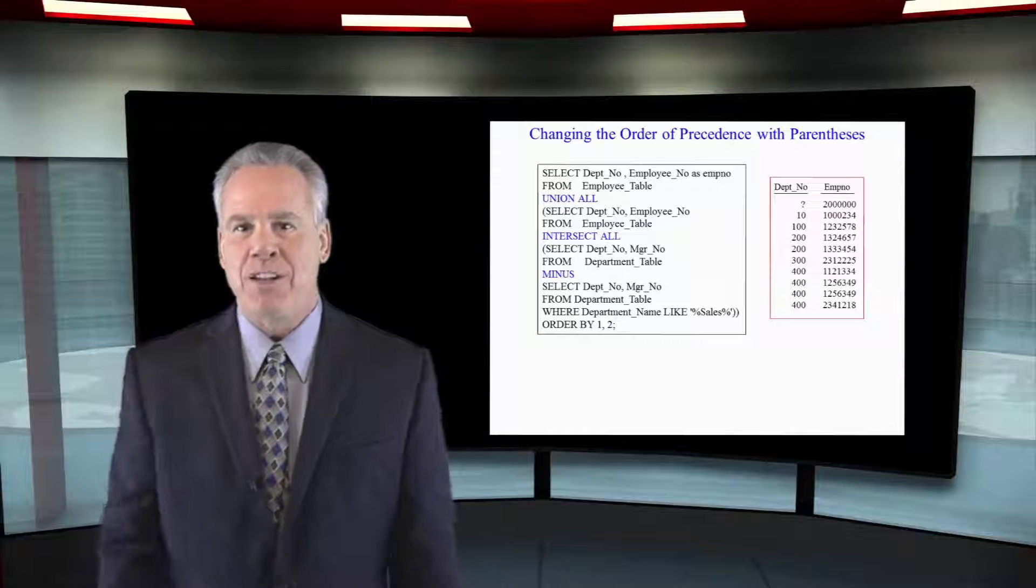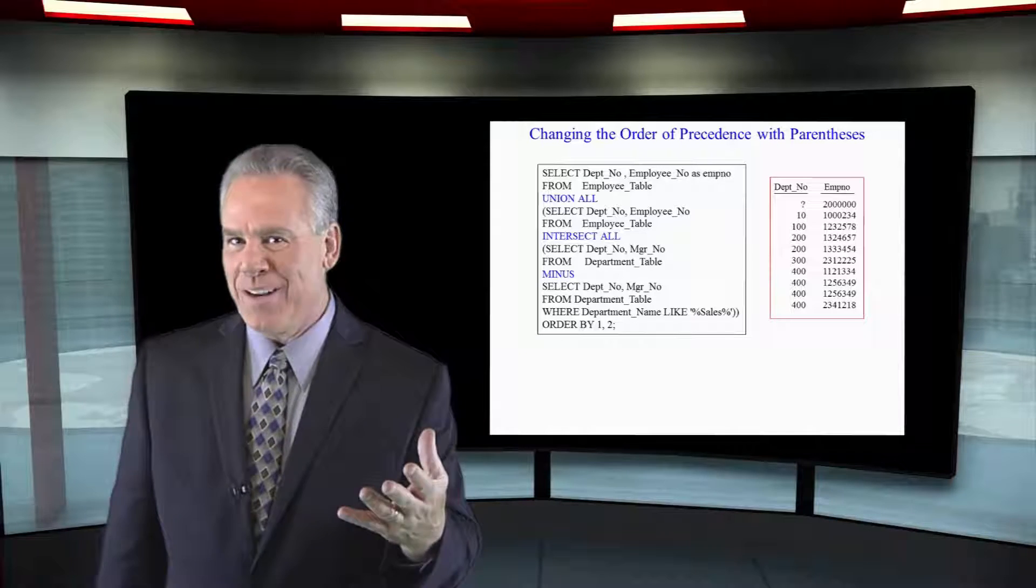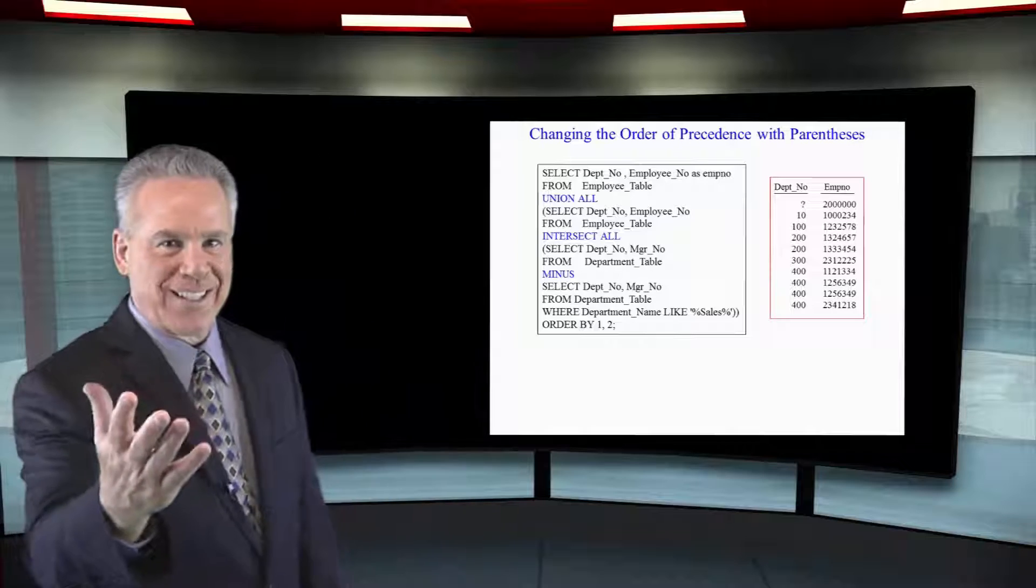So the minus will run first. The intersect will be evaluated second. And then lastly will be the first select.